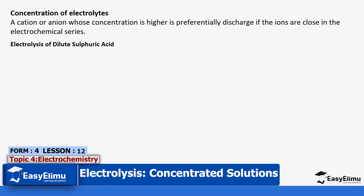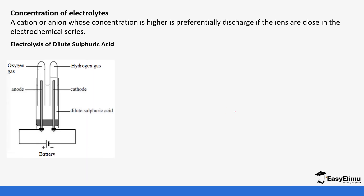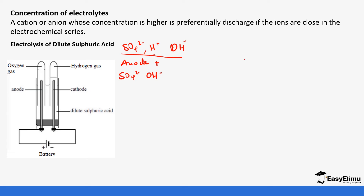We will start with dilute sulfuric acid. The first thing is to determine the ions in solution. We have the sulfate ions, the hydrogen ions, and the hydroxyl ions. Hydrogen ions are produced by sulfuric acid and also water. At the anode, which is positive, all the anions go to the anode — that is sulfate ions and hydroxide ions. At the cathode, the cations — so hydrogen ions.